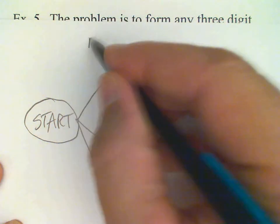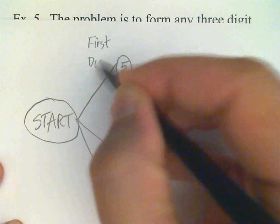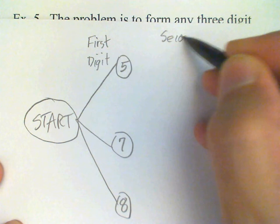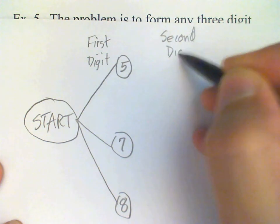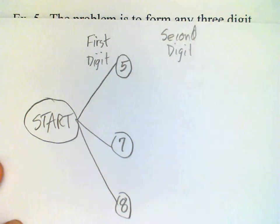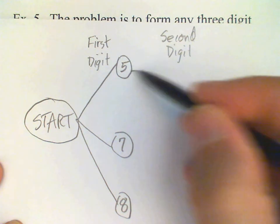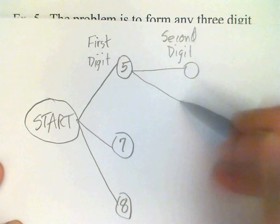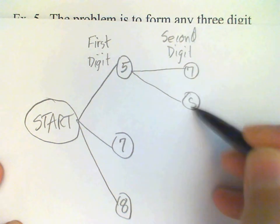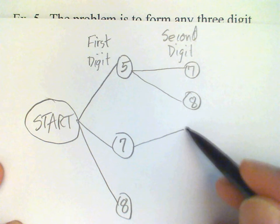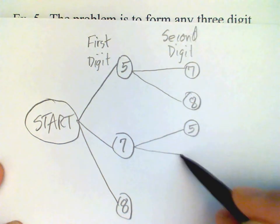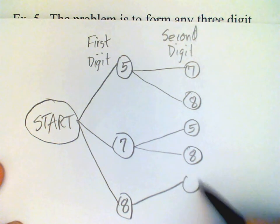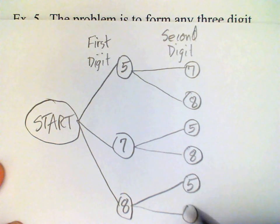I'm restricted in my choices because I'm not allowed to repeat the digit I've already used. So for 5, there are only two possibilities. There's 7, and there's 8, and for 7, only two possibilities, 5 and 8, and for 8, there's 5 and there's 7.